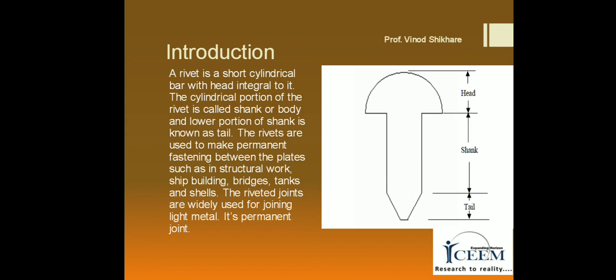Introduction: What is a rivet? A rivet is a short cylindrical bar with a head integral to it. The cylindrical portion of the rivet is called the shank or body, and the lower portion of the shank is known as the tail of the rivet. Rivets are used to make permanent connections between plates such as in structural work, shipbuilding, bridges, tanks, and shells. Riveted connections are widely used for joining light metals and are a permanent type of connection.